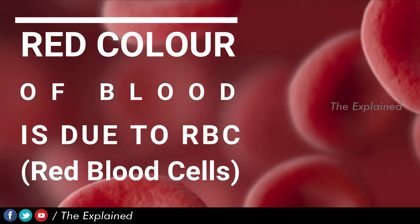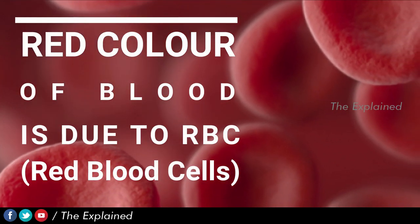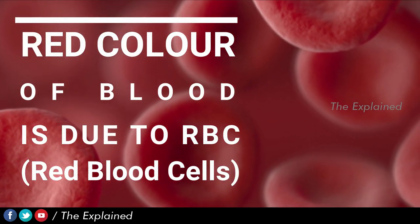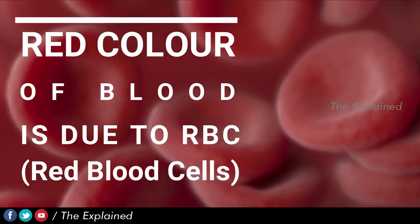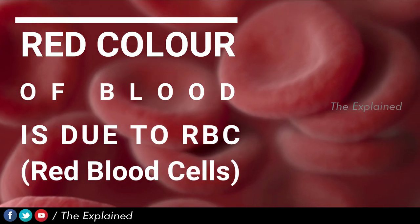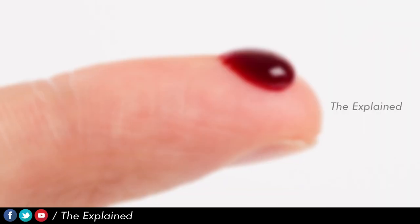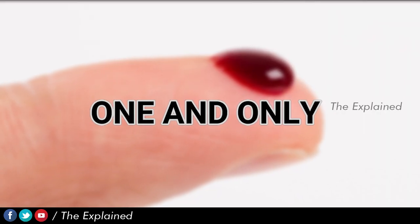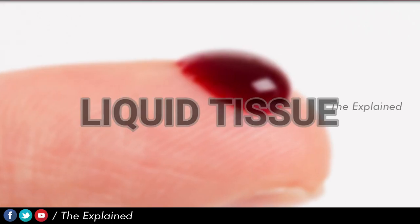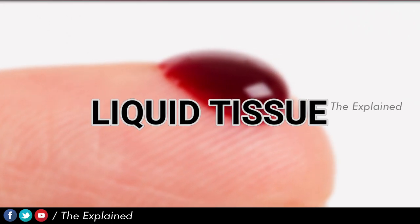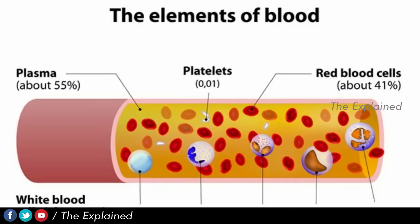We know blood is composed of different components. One component is called RBC. If we consider the only liquid component, it is called plasma.